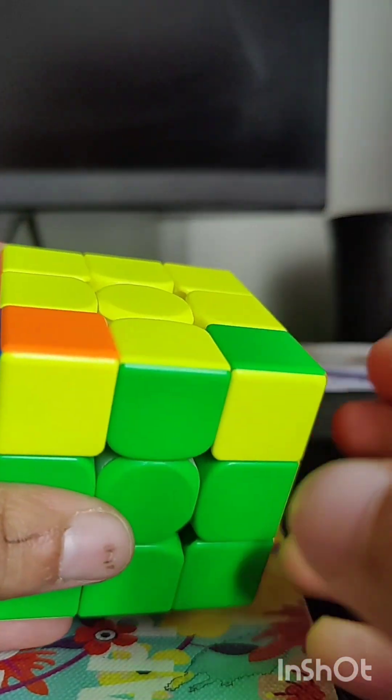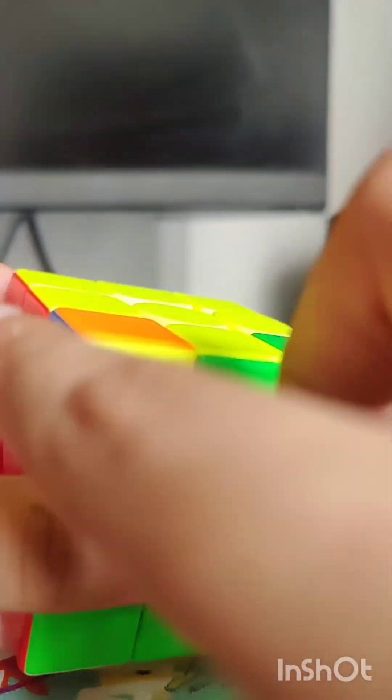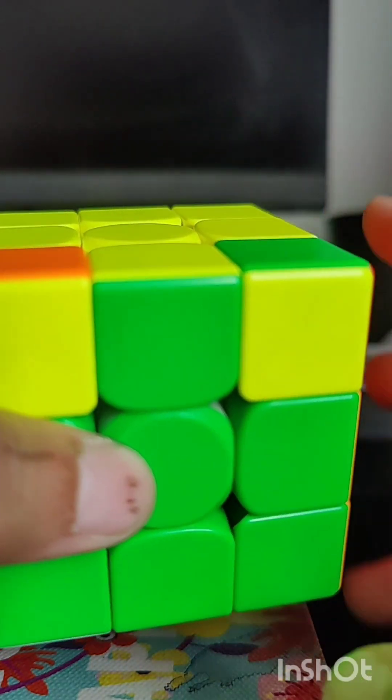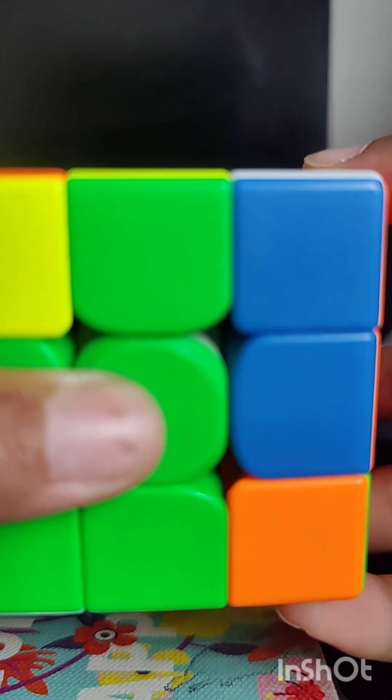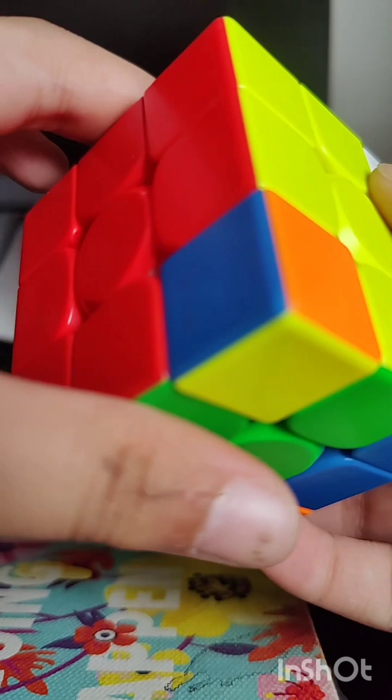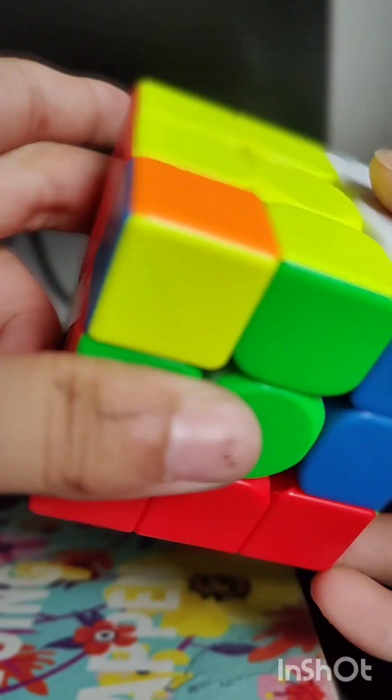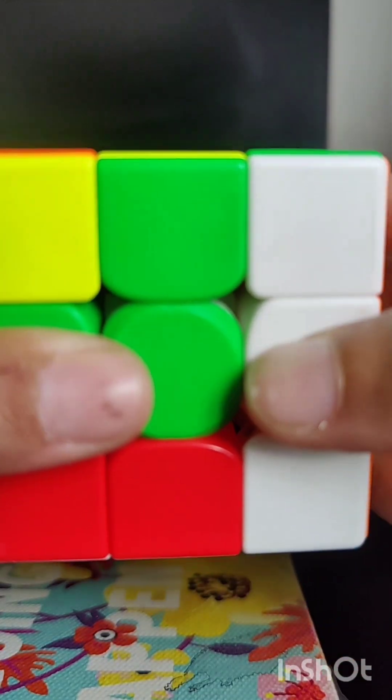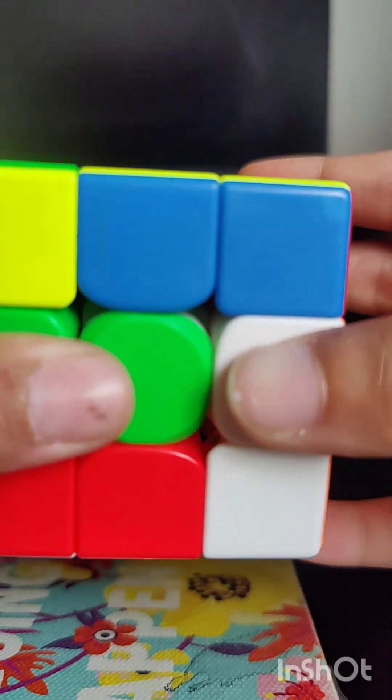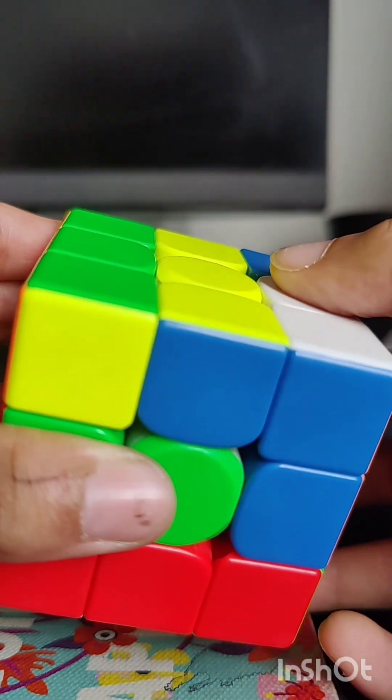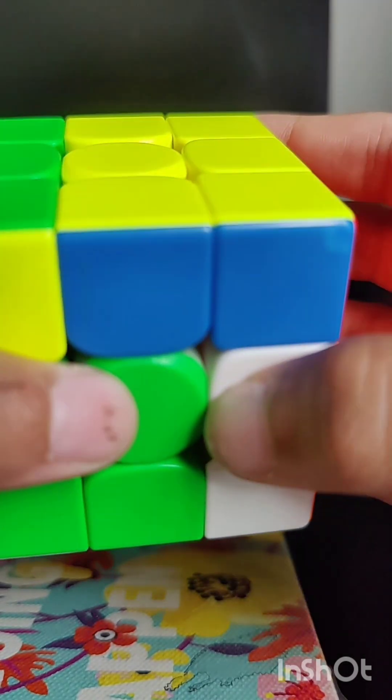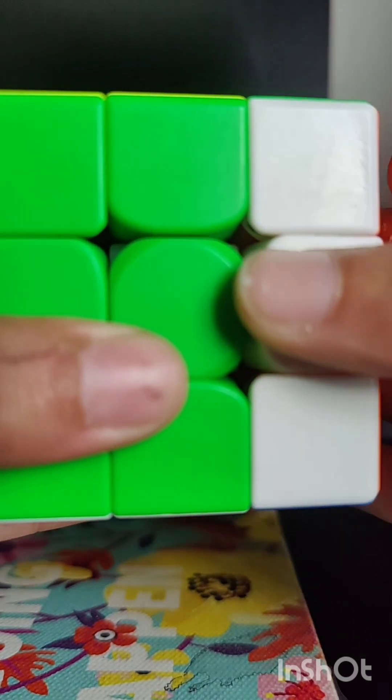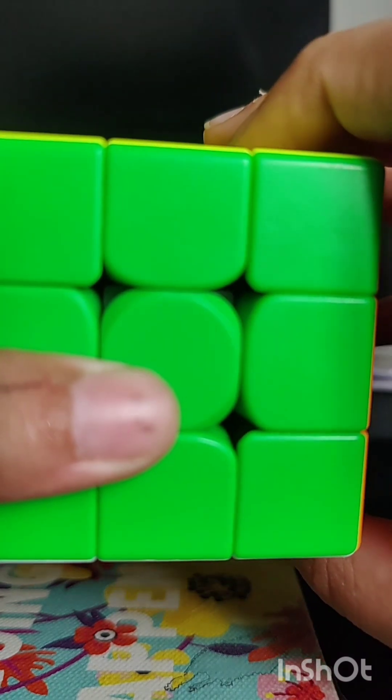This is the last case where we have two corners solved next to each other, but this time we have headlights instead of them being away from each other. So what you have to do is hold those headlights in the front and do R2, then do a D move, R prime U2 R, D prime, R prime U2 R prime.